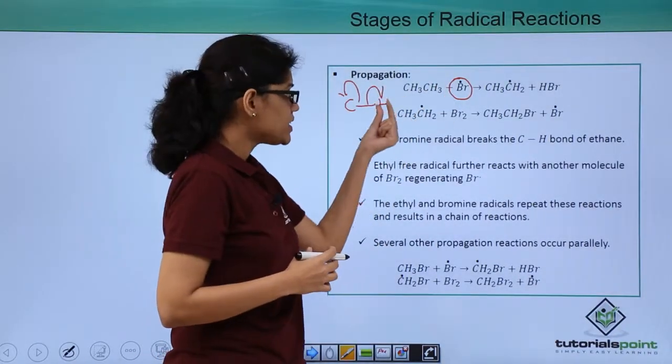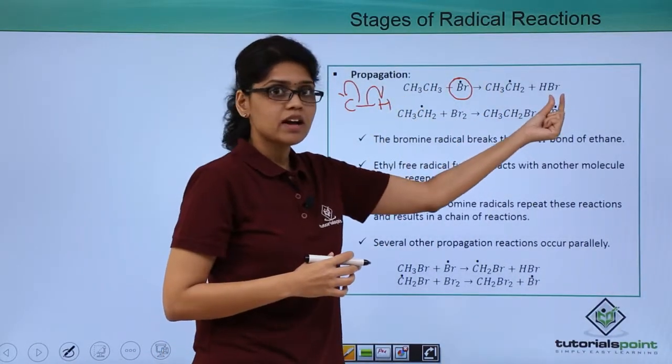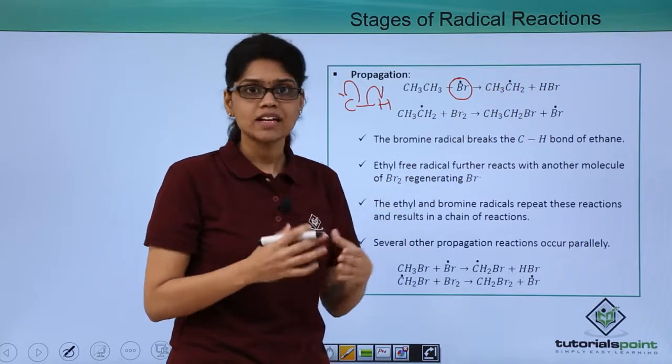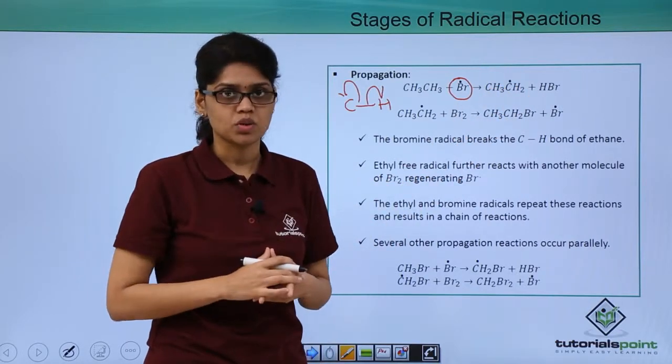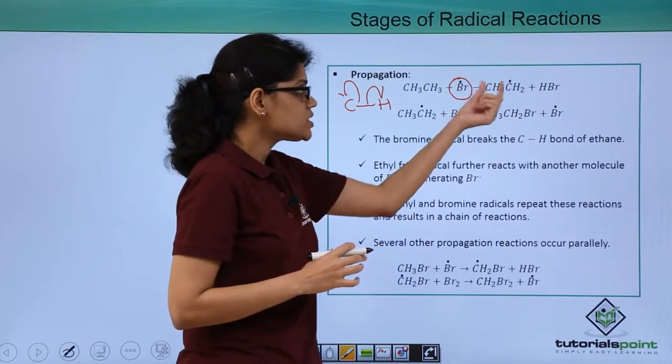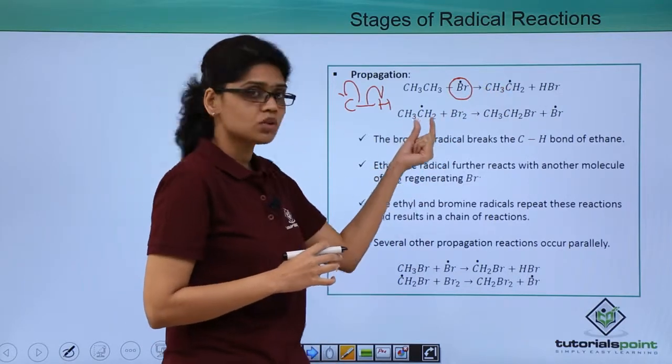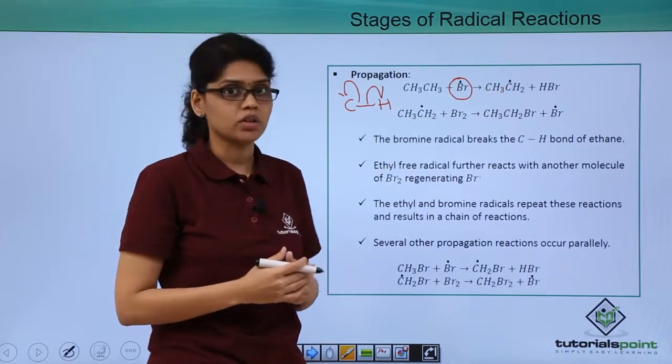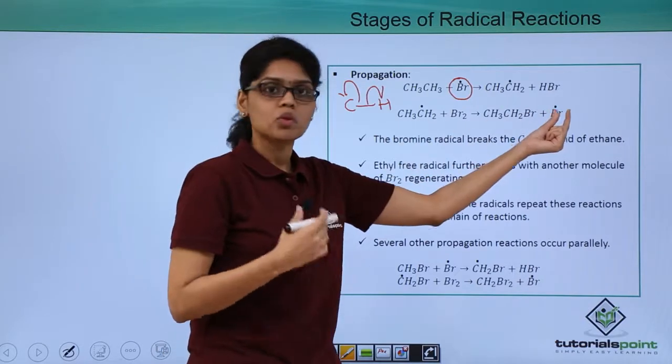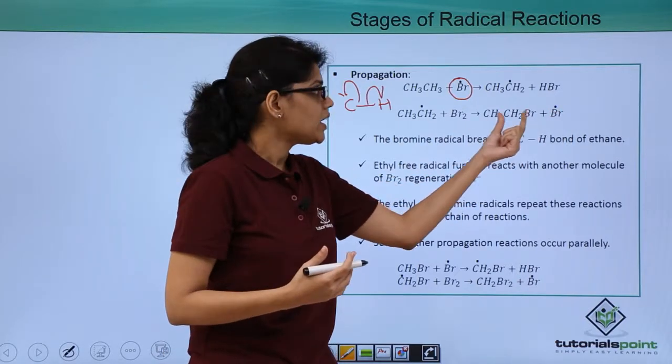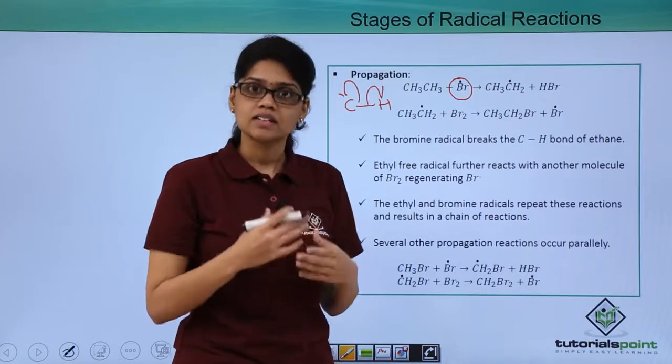Br dot combines with H dot to give us HBr, and the corresponding free radical is obtained, which is ethyl free radical or CH3CH2 dot. In the second step, this radical CH3CH2 dot reacts with another bromine molecule where Br dot is regenerated, and you get the corresponding product which is ethyl bromide.